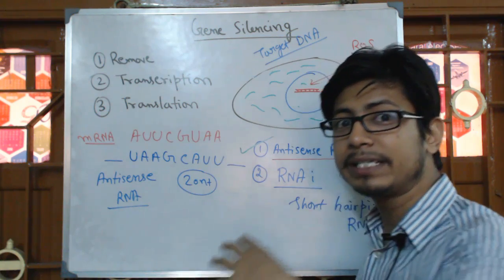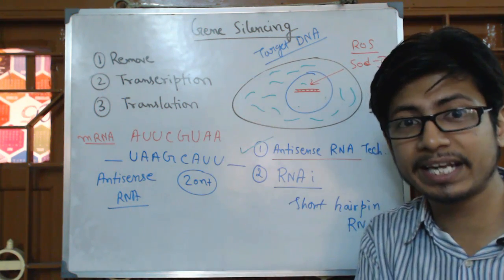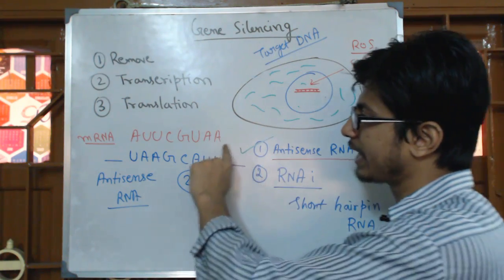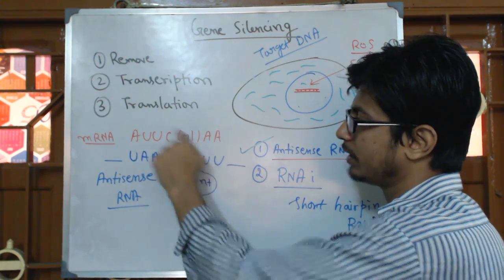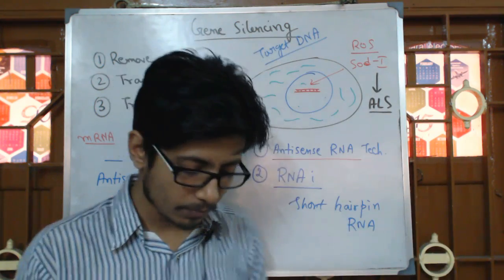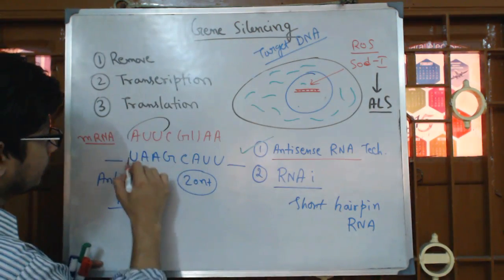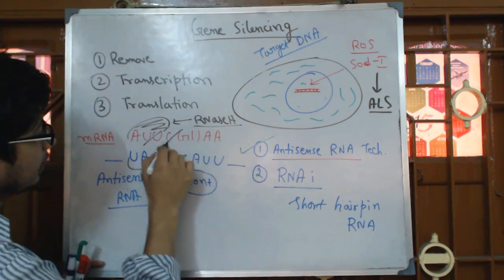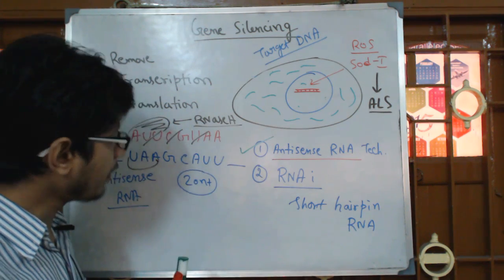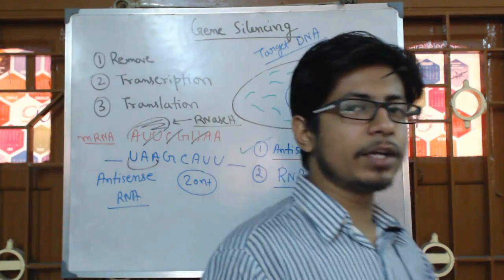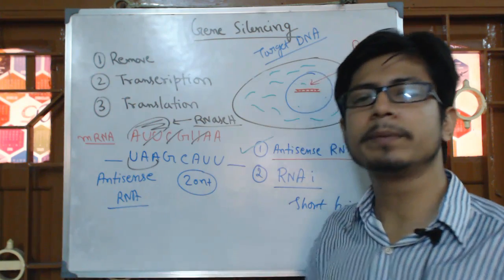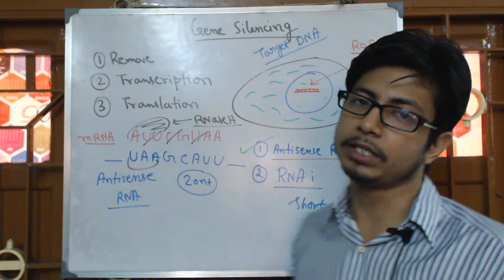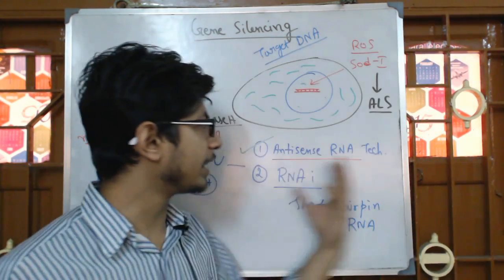Once the antisense RNA binds to the mRNA, it recruits the help of RNase H, which is an enzyme in our body. RNase H can selectively break down the mRNA sequence present in the RNA-DNA hybrid. So RNase H is recruited and it breaks the target mRNA down. This way we can get rid of all the mRNAs, and if all the mRNAs are degraded, there is no way the protein will be produced.